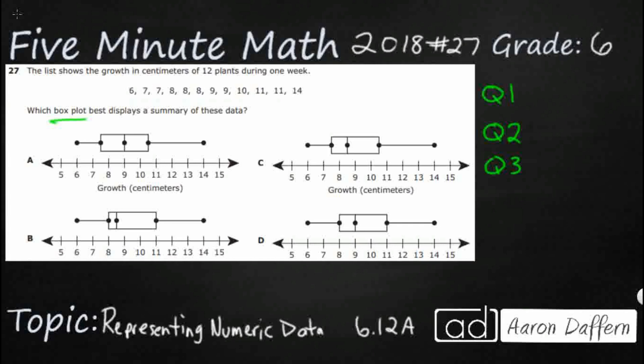If you have an odd number, you're just going to circle the one that's in the middle and that will give you your halves on either side. But in this case, we actually have an even number, so the split is going to be right here. I'm going to put two little boxes here — that lets me know I've got six numbers on the left and six numbers on the right. So my median is going to be right here in the middle.